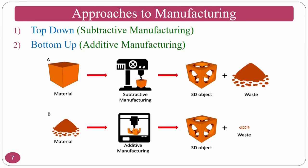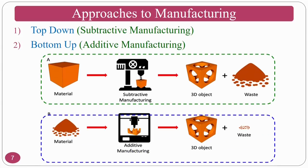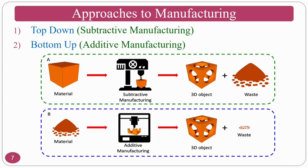There are two approaches in manufacturing: the top-down approach and the bottom-up approach. The top-down approach is called subtractive manufacturing — this course mainly deals with this. The bottom-up approach is called additive manufacturing. In subtractive manufacturing, you take a raw material, do the machining process, remove material as per your requirement, and get the product. In additive manufacturing, you take metal powders and construct using 3D printing, selective laser sintering, or powder metallurgy.